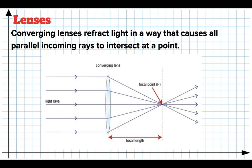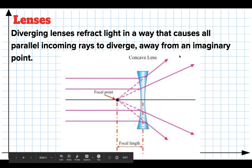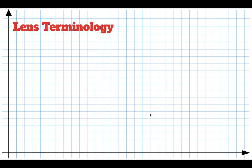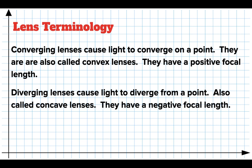A lens is a device which causes light to bend or change directions. We can make lenses of different shapes. This is what we call a diverging lens — in this case, the light coming in, instead of going towards a point, gets bent so that it looks like it's coming away from a point. Converging lenses are also sometimes called double convex lenses; they cause light to converge at a point and have a positive focal length. A diverging lens causes light to diverge — those are called concave lenses and they have a negative focal length.